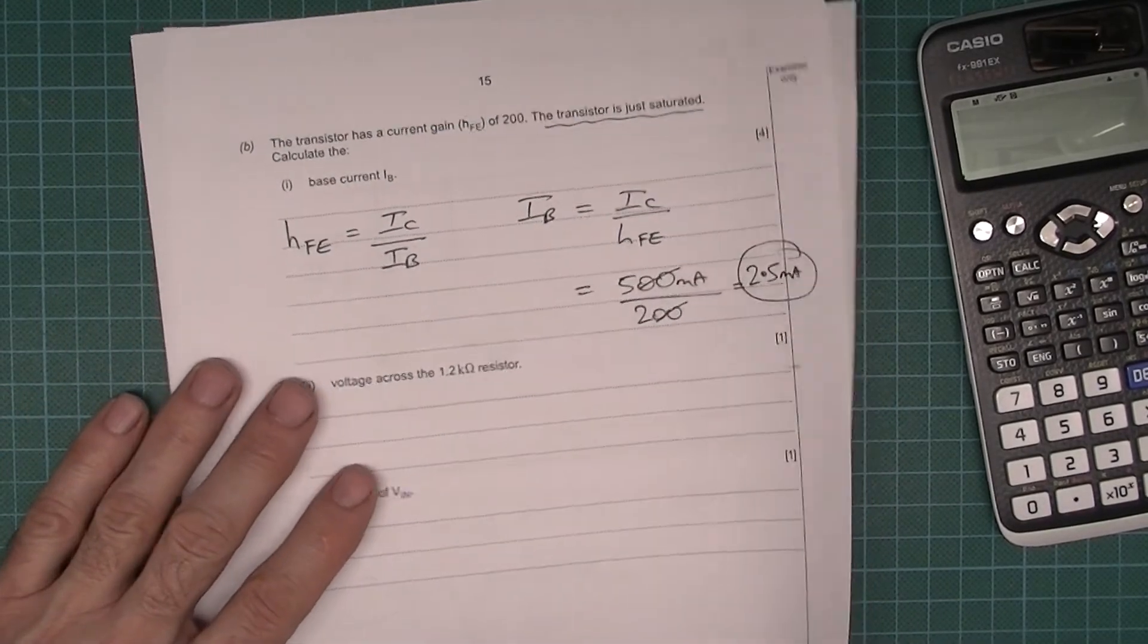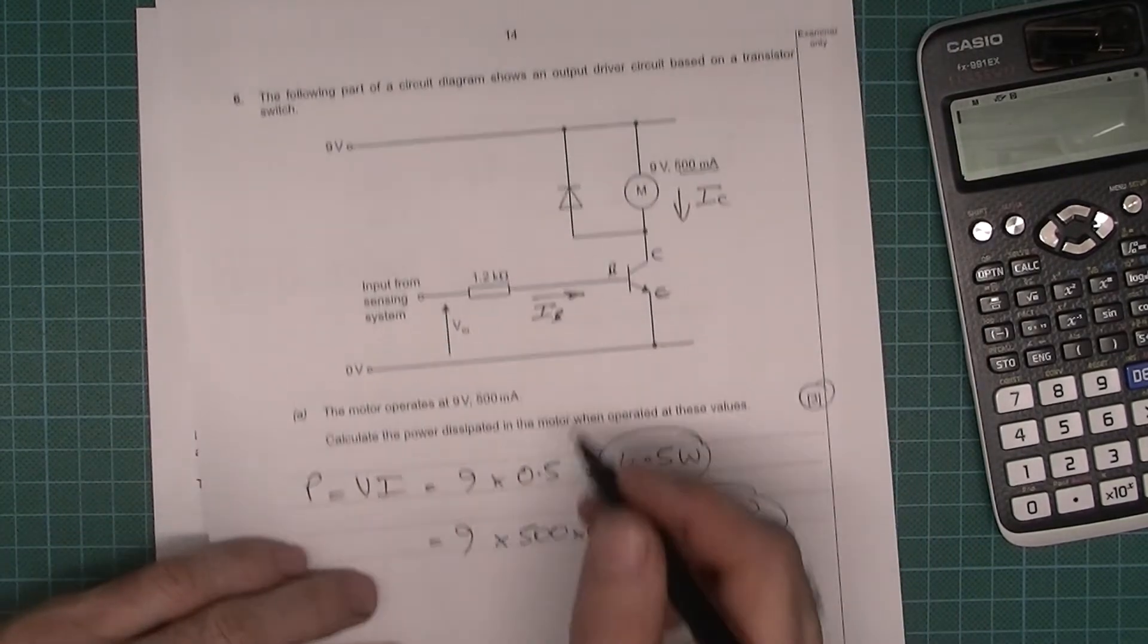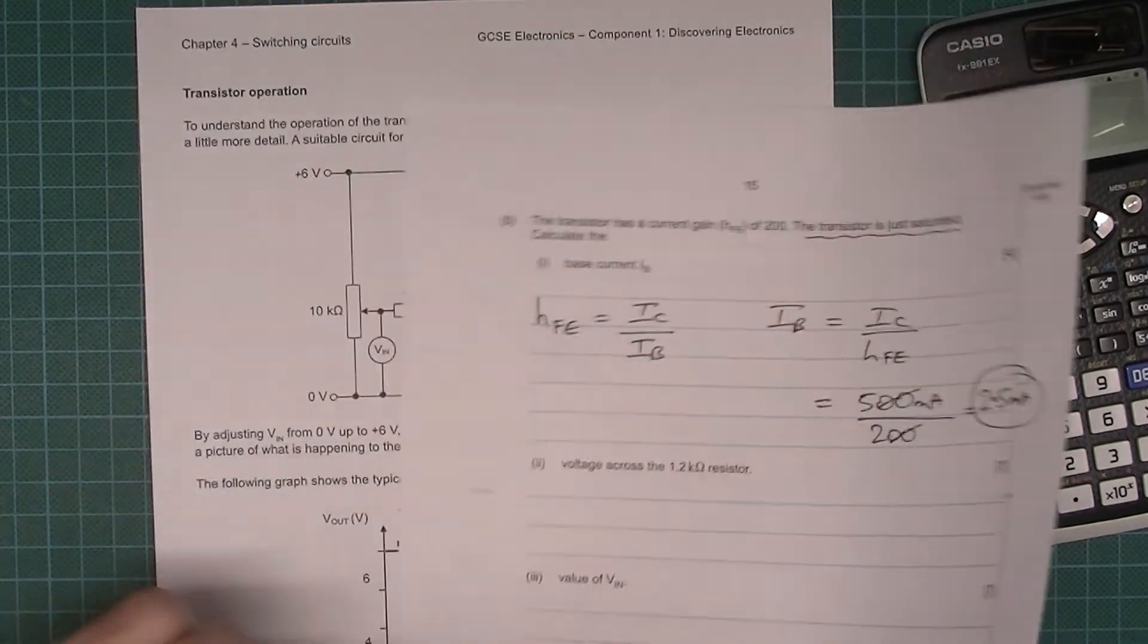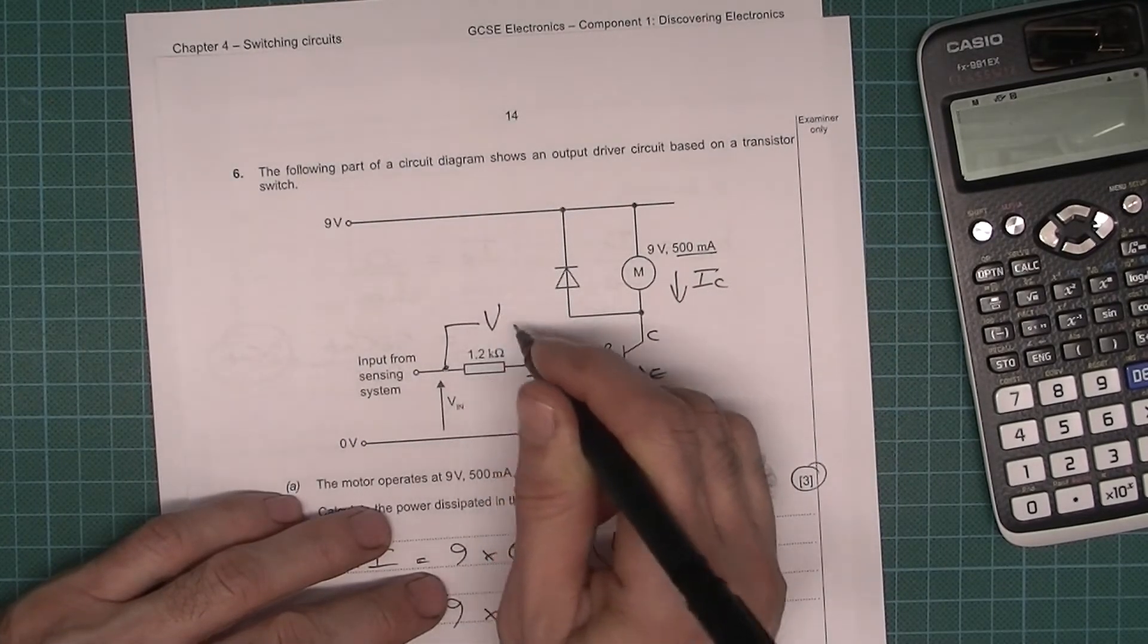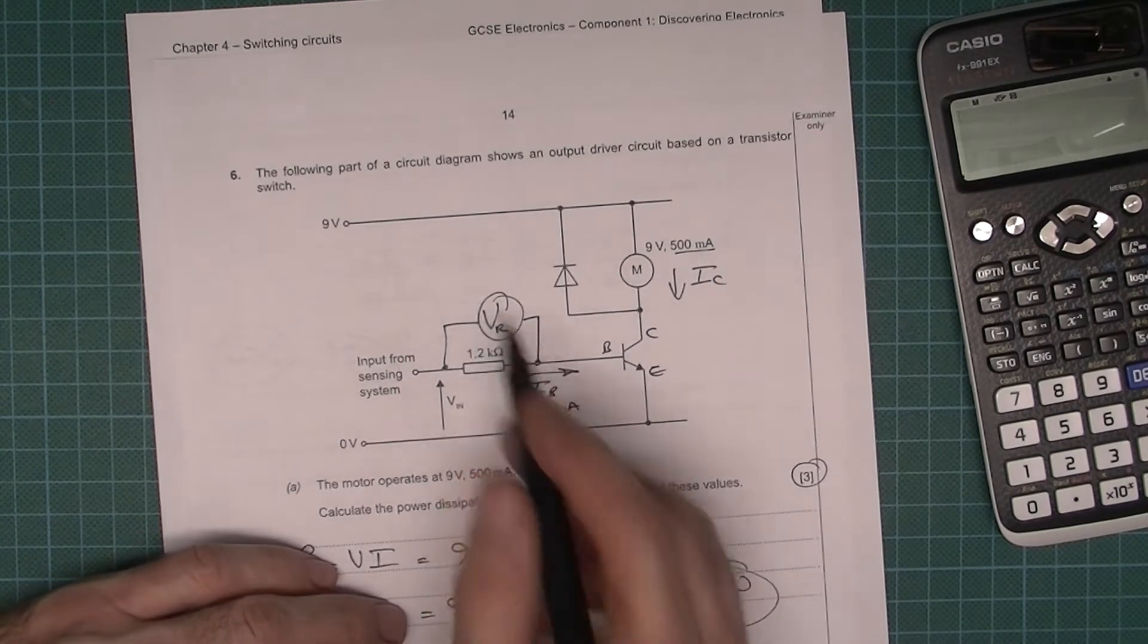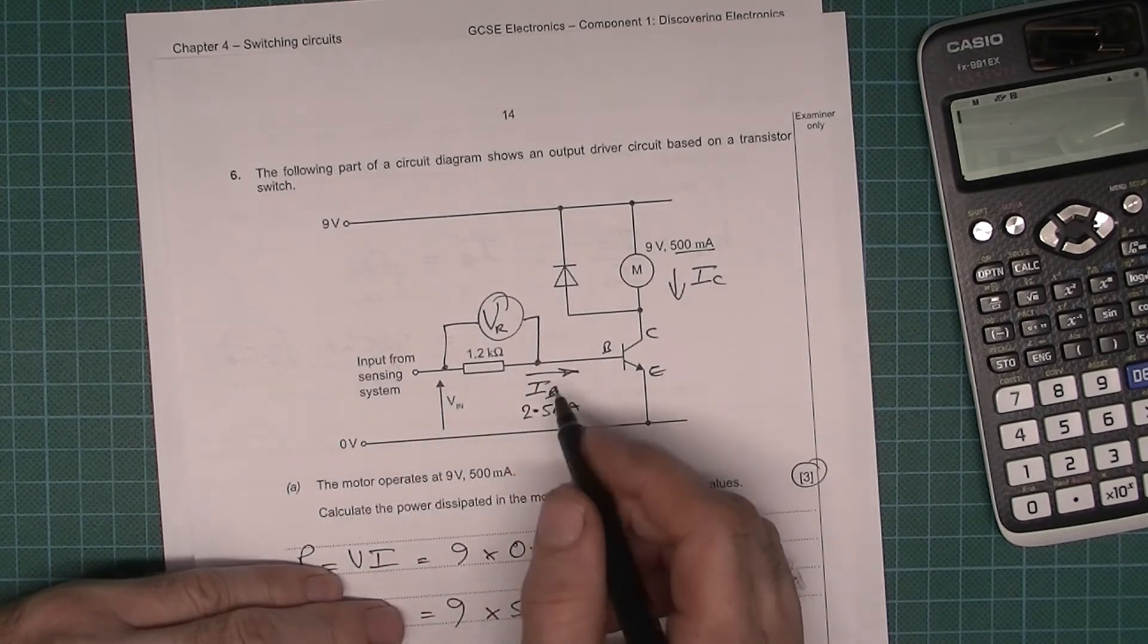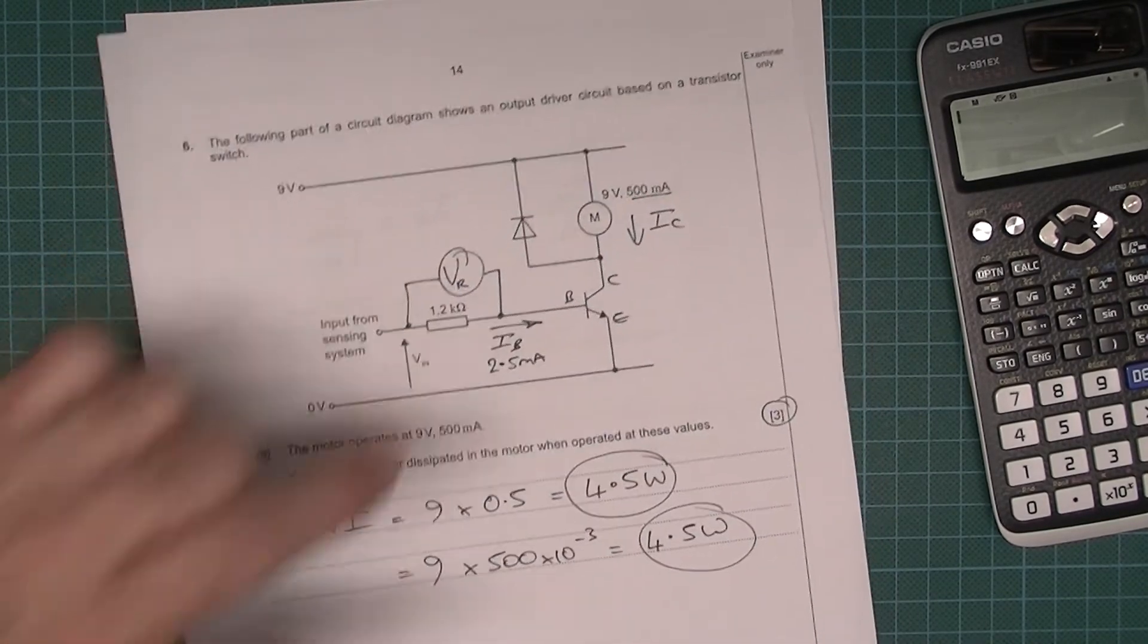Voltage across the 1.2k resistor. Well, before we do that, let's just annotate our circuit diagram: 2.5 milliamps, because we now know the base current, which is 2.5 milliamps. It's always a really good idea to annotate like this. And so we now want to calculate the voltage across the resistor, not that voltage. We want to calculate this voltage. I'll call that the resistor voltage there. So we need to calculate that. Well, we know the current that's flowing through it. Remember, the same current, 2.5 milliamps, is going to be coming along here, bringing its way in into the base. And we know the resistance, and because we know the current and resistance, we should be able to calculate the voltage.